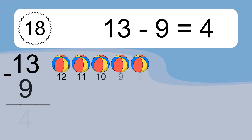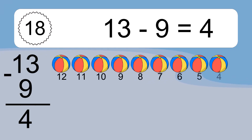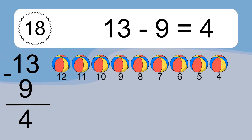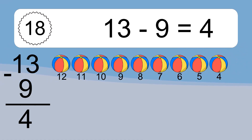13 minus 9 equals what? 13 minus 9 equals 4. Let's count it: 12, 11, 10, 9, 8, 7, 6, 5, 4.